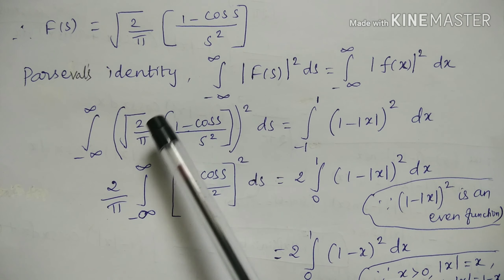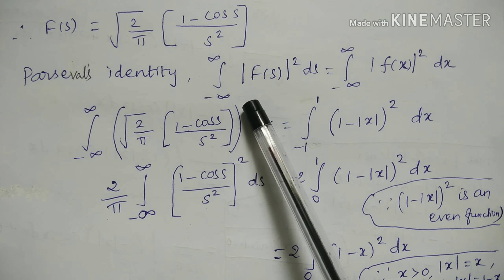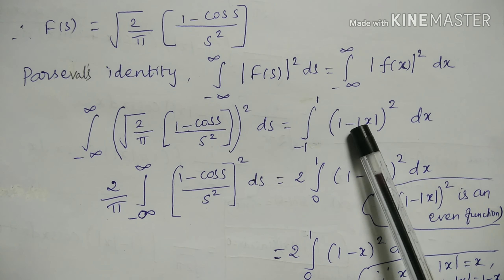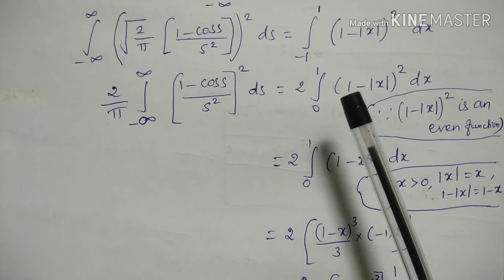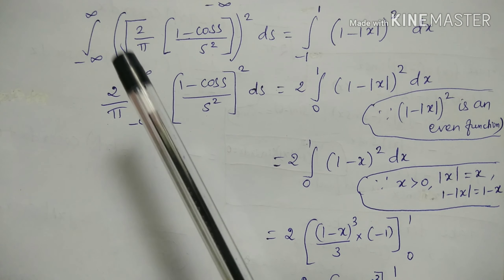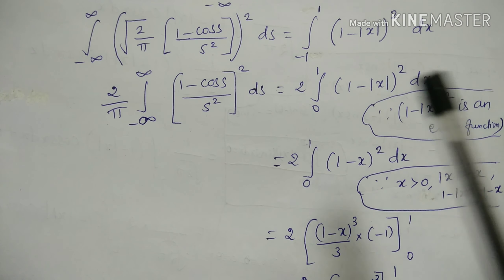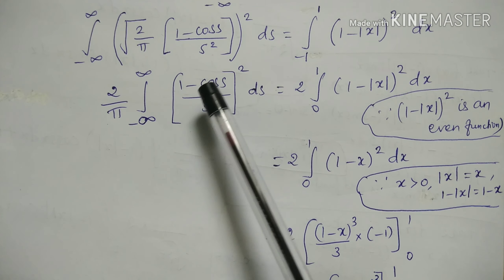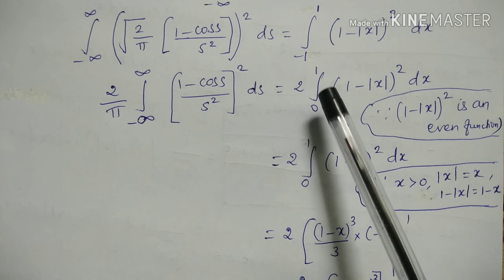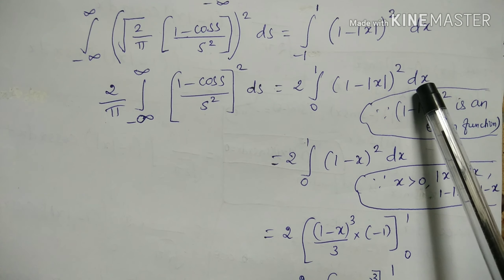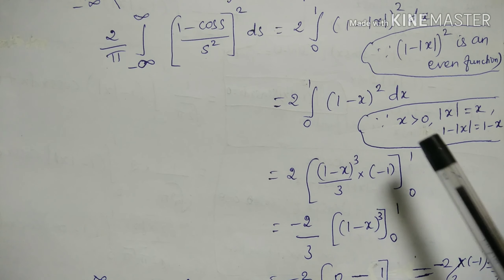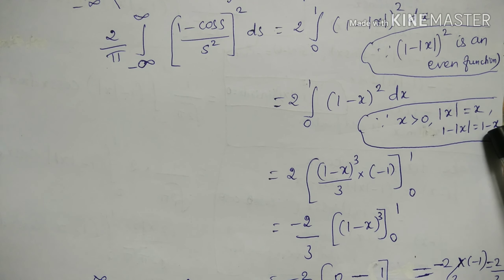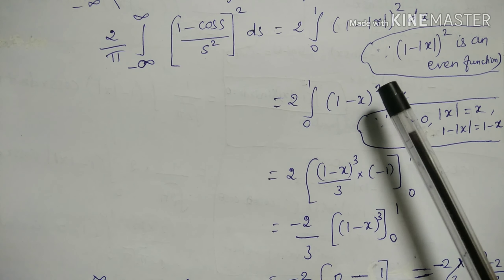Now applying Parseval's identity: integral from −∞ to ∞ of |F(s)|² ds = integral from −∞ to ∞ of |f(x)|² dx. Substituting F(s) and f(x): integral from −∞ to ∞ of [√(2/π) · (1 − cos s)/s²]² ds = integral from −1 to 1 of (1 − |x|)² dx. Since (1 − |x|)² is even, the right side equals 2 · integral from 0 to 1 of (1 − x)² dx.